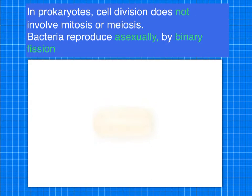In prokaryotes such as bacteria, cell division does not involve mitosis or meiosis as it does in eukaryotes. Bacteria reproduce asexually — meaning they produce a genetically identical copy — by binary fission. Let's take a look at this animation.